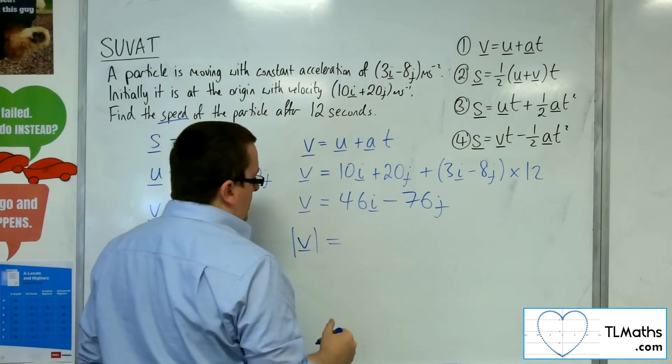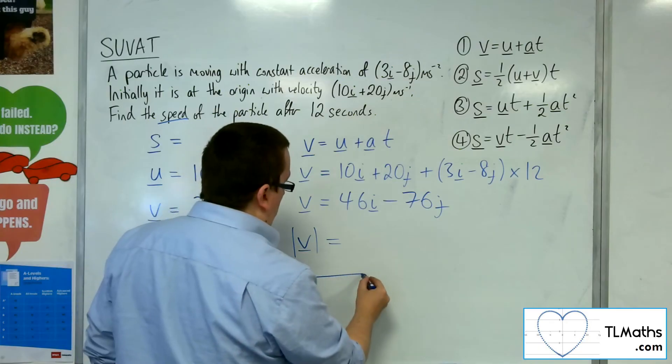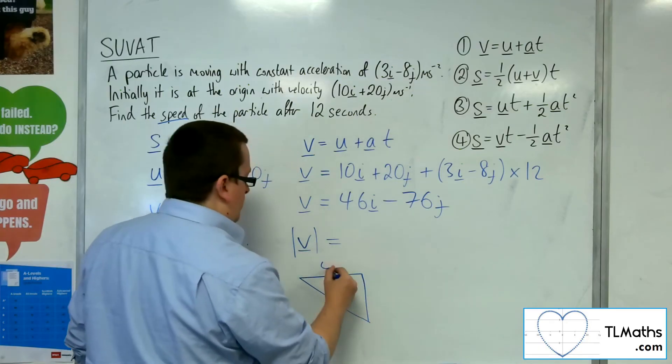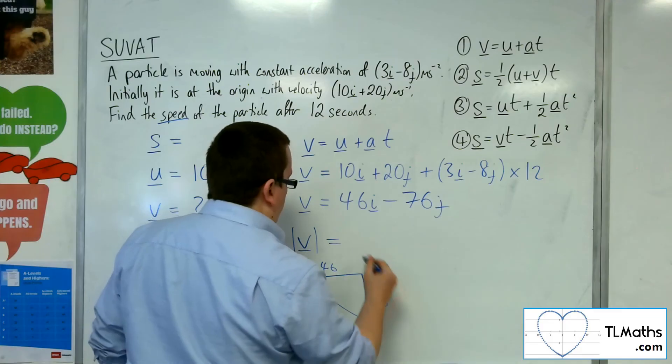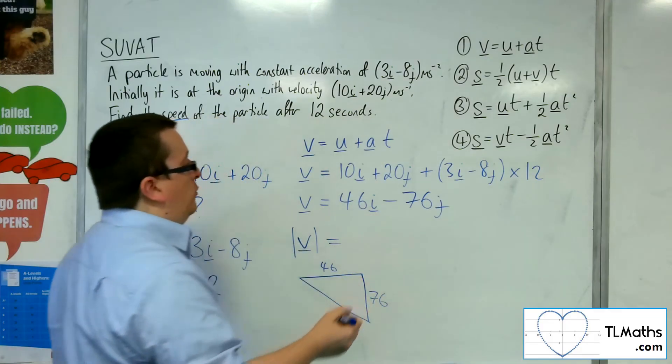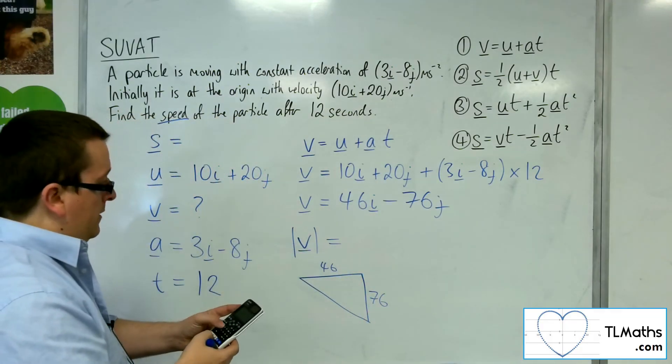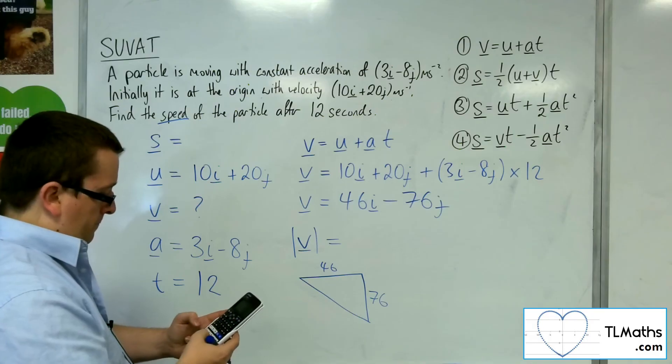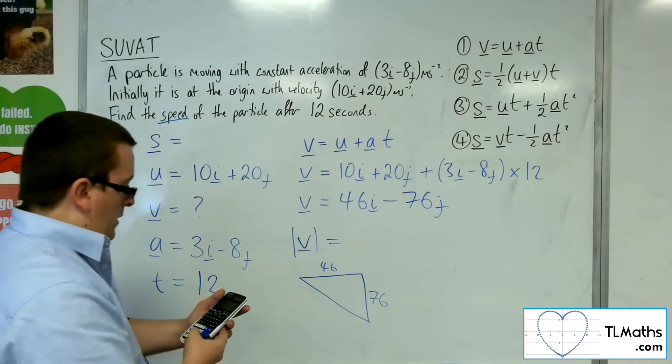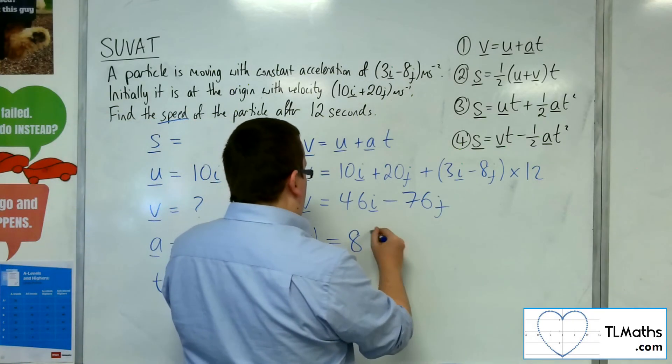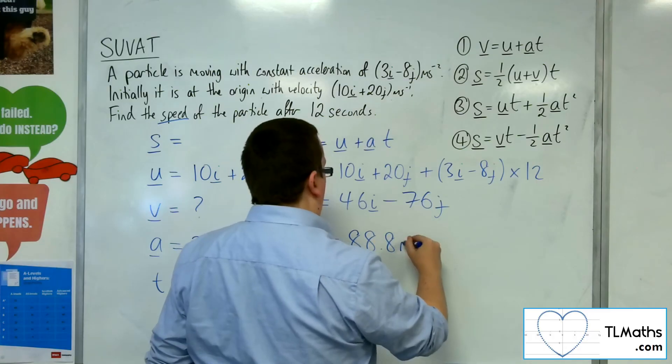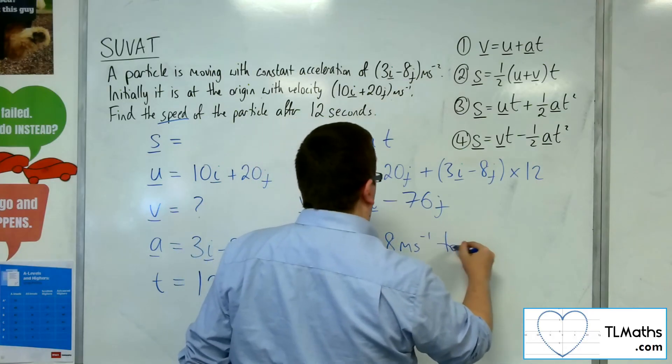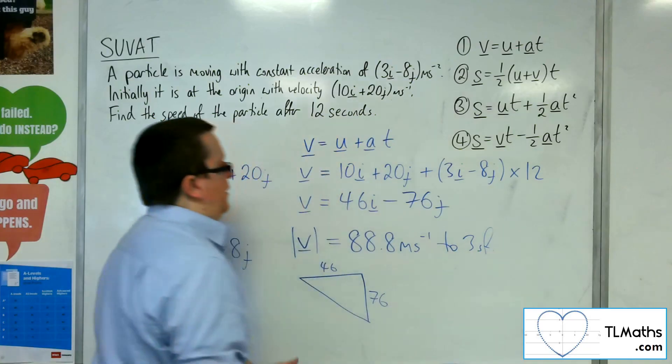Okay, so we're going 46 along, 76 down. So it would be the square root of 46 squared plus 76 squared. And that gets me 88.8 metres per second to 3 sig fig.